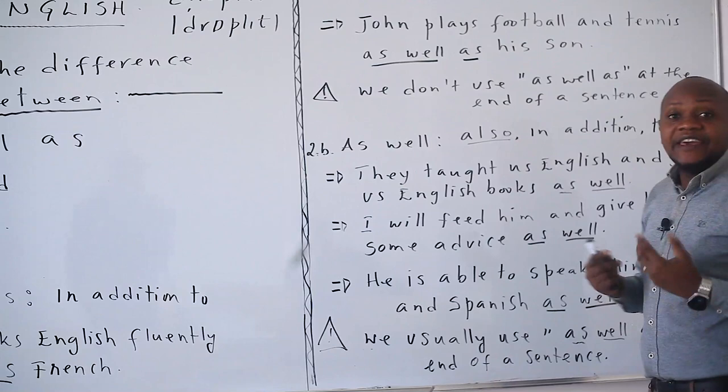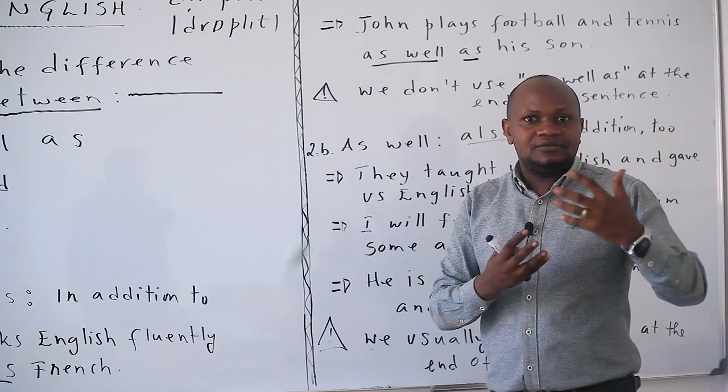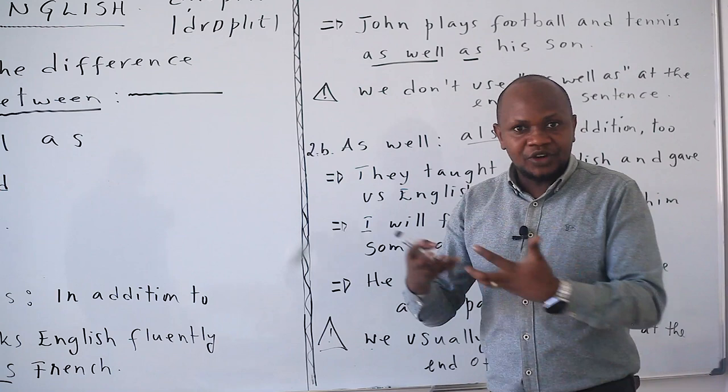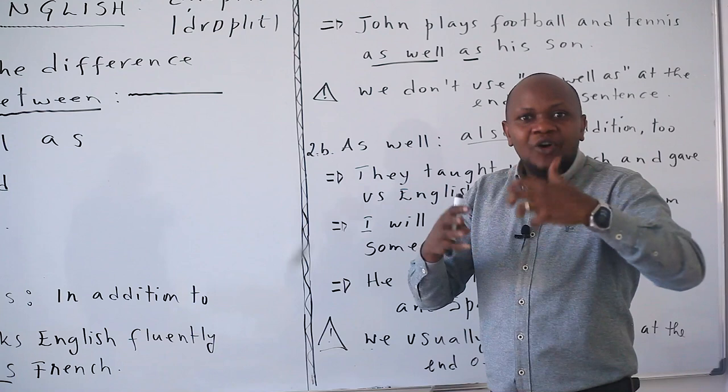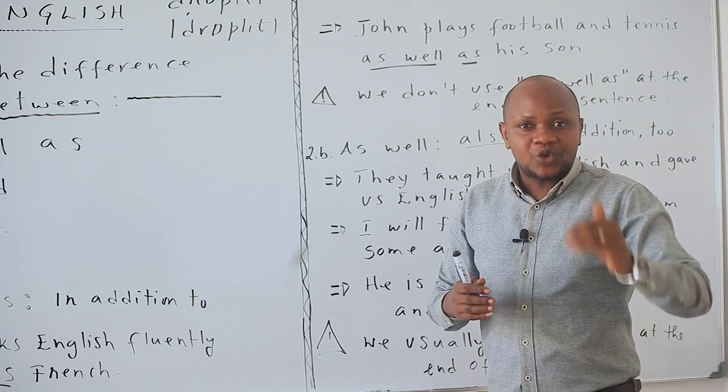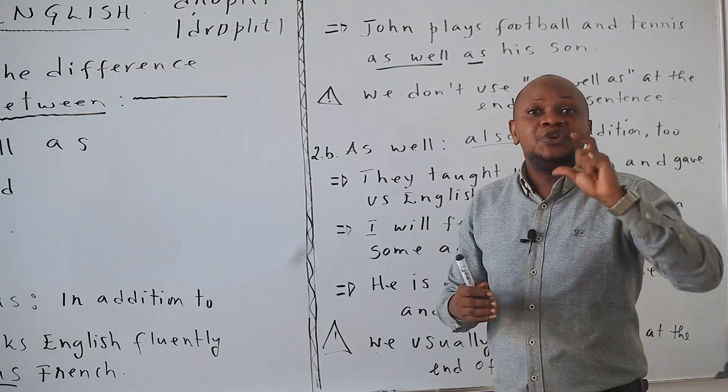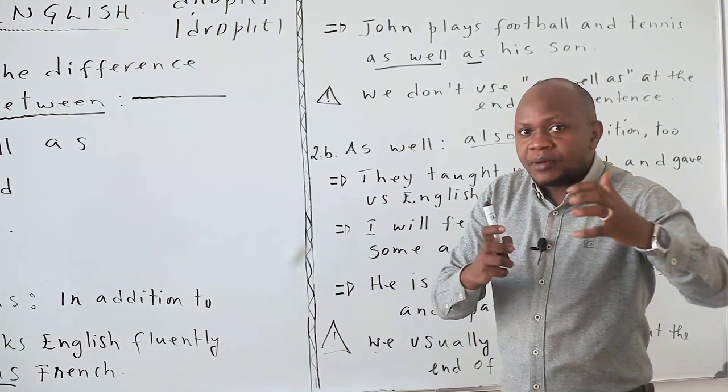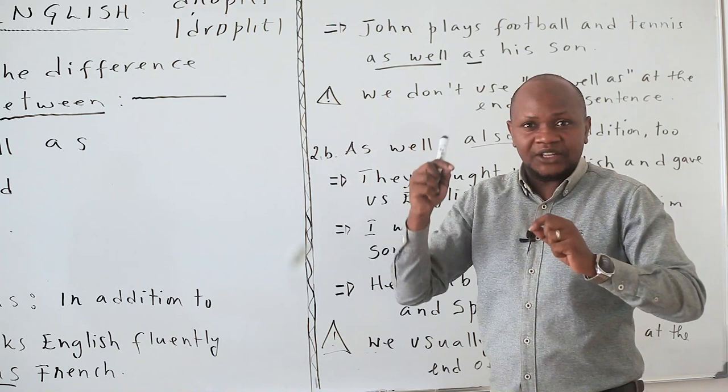I can say: 'I speak English very well as well as Swahili.' I can also say: 'Last week I traveled to different countries of Africa as well as European countries.' As well as European countries. Here, we do not use as well as at the end of a sentence — please remember that.